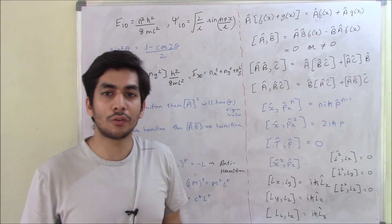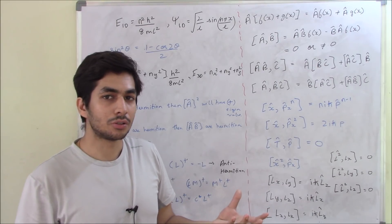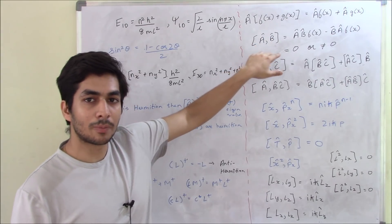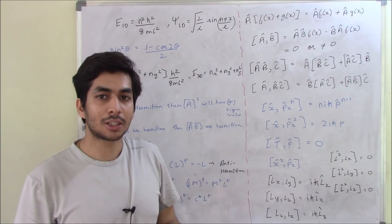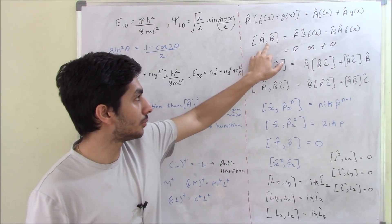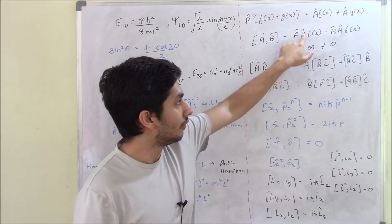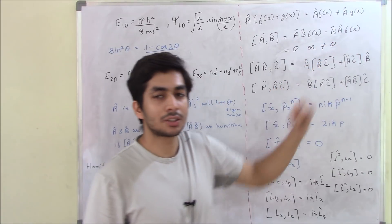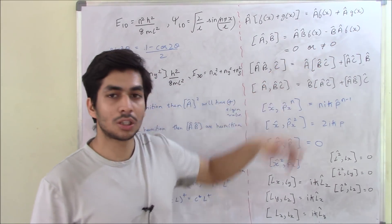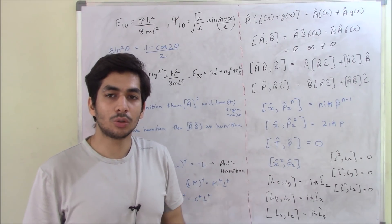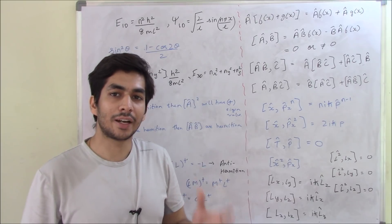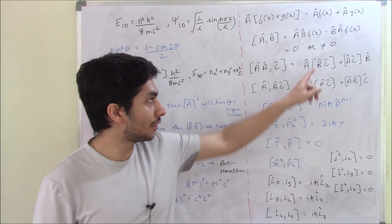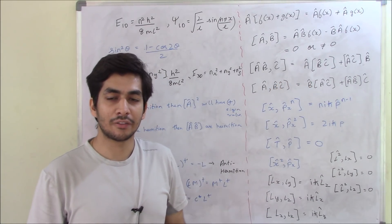f(x) is not compulsory, but to solve commutators it becomes easy if you take some function. If the commutator [A, B] comes out equal to zero — meaning A operating then B minus B operating then A equals zero — then we say the operators commute. If the operators commute, we can find their values simultaneously. But if it is not equal to zero, then we cannot find their values simultaneously.